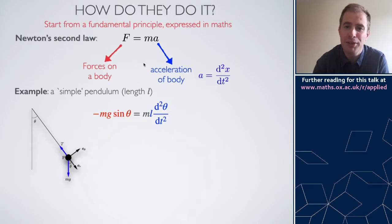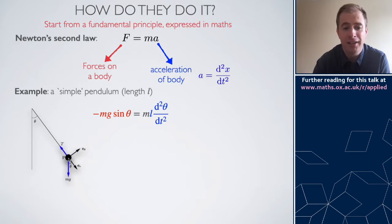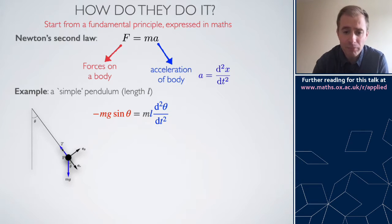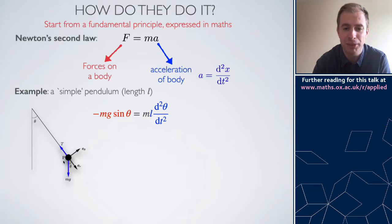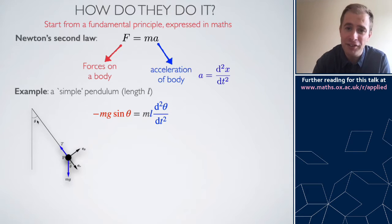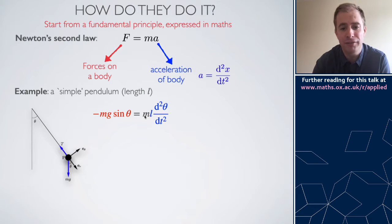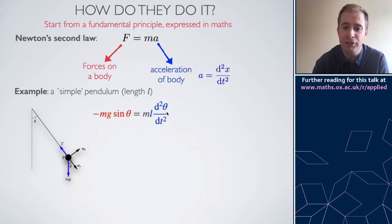As a more concrete example, consider a simple pendulum — a mass m on the end of a string of length L. The forces on the body are its weight mg and the tension of the string. Writing Newton's second law for the tangential direction, the force is minus mg times sine of theta, where theta is the angle the string makes to the vertical, and that equals the mass times the acceleration, which in the tangential direction is L times the second derivative of theta.